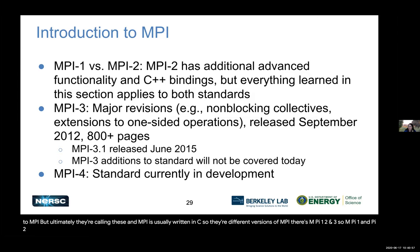There are different versions of MPI: MPI-1, MPI-2, and MPI-3. MPI-1 and MPI-2 are fairly similar; MPI-2 has some additional advanced functionality and C++ bindings. Everything we learn today applies to both standards. MPI-3 has major revisions including non-blocking collectives and extended one-sided operations — it's an 800-page standard. The latest release was June 2015, MPI 3.1, and the MPI on Cori is compatible with MPI 3.1. MPI-4 is currently in development.